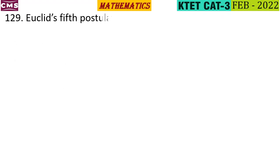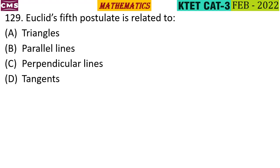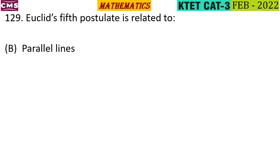Euclid's fifth postulate is related to which of the following? The options are: triangles, parallel lines, perpendicular lines, and tangents. The correct answer is option B — parallel lines.